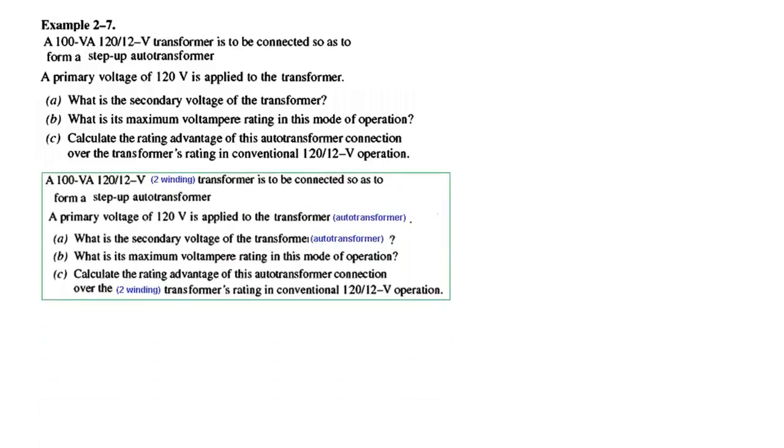So first of all it's saying 100 volt ampere 120 by 12 volt transformer. So I have written it, it is actually the 2 winding transformer is to be connected so as to form a step up autotransformer.